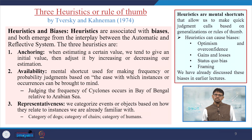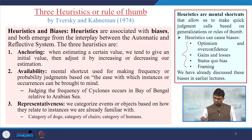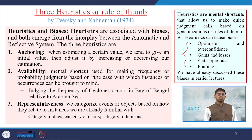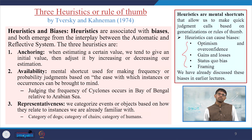Heuristics can cause biases, which we have already discussed. These biases include optimism and overconfidence, gains and losses, status quo bias, and framing. The three heuristics as proposed by Tversky and Kahneman are anchoring, availability, and representativeness. Heuristics are associated with biases, and both emerge from the interplay between the automatic and reflective systems.